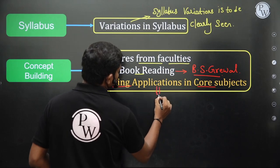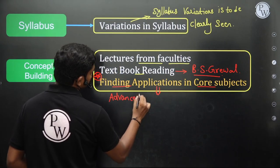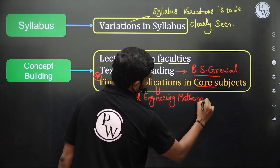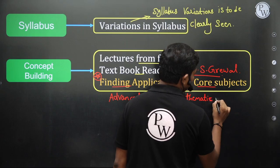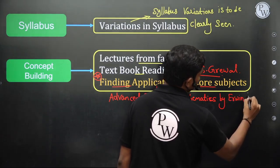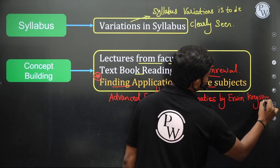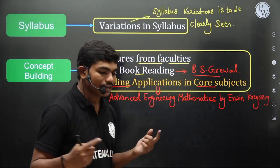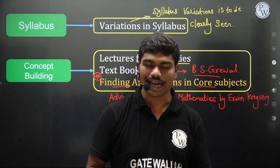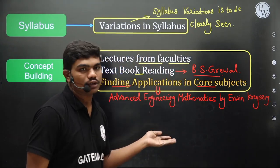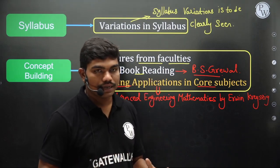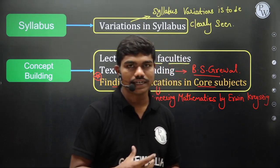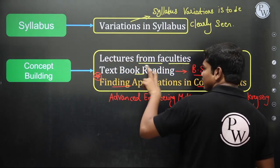Another book I would suggest is Advanced Engineering Mathematics by Erwin Kreyszig — a really fantastic and very nice book. This book has all technical applications: when it talks about linear equations, it discusses circuits; when it talks about differentials, it gives many practical examples. So Kreyszig is for finding applications in core subjects, and B.S. Grewal is for conceptual understanding. The building of concepts has to be very strong because maths is all about understanding fundamentals.